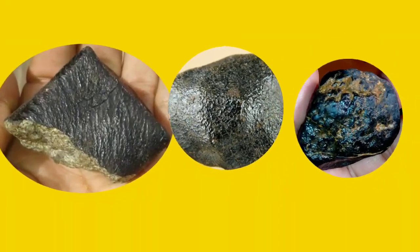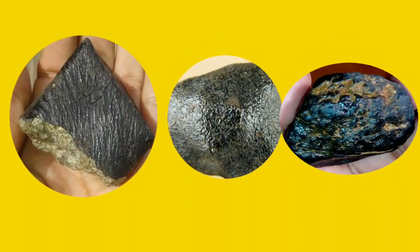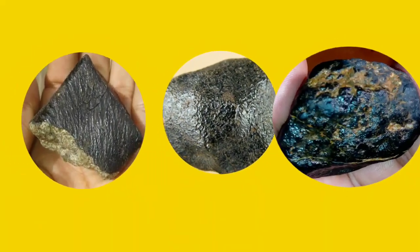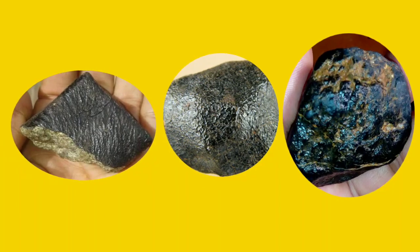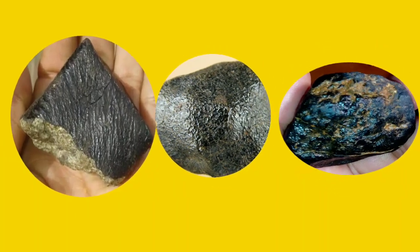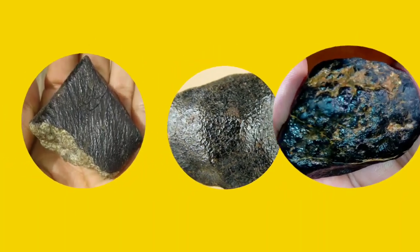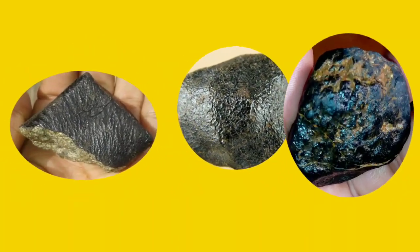Fresh meteorites have fusion crust, an aerodynamic shape, and possibly thumbprints or regmaglypts. Weathered meteorites may be more difficult to recognize due to the deterioration of its meteoritic properties.